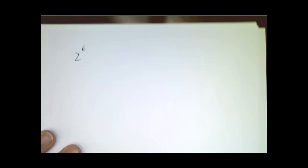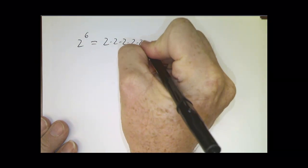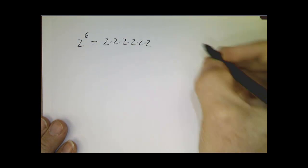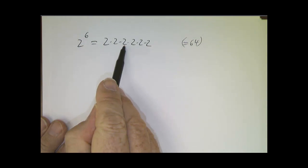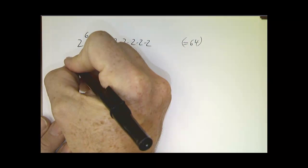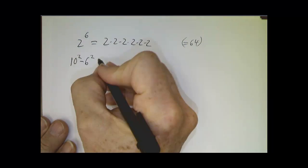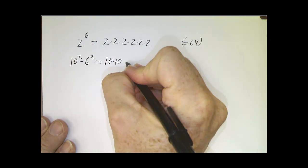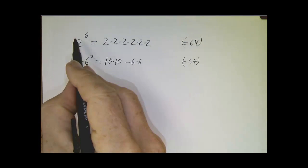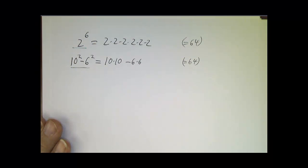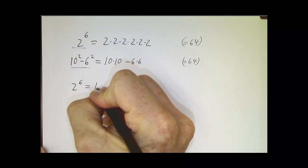Let me go by analogy. What does 2 to the 6th mean? It means 2 times 2 times 2 times 2 times 2 times 2 — six times. And that happens to equal 64, but that's not what 2 to the 6th means. If I ask what is 10 squared minus 6 squared, that means something completely different — it means 10 times 10 minus 6 times 6. And that also happens to equal 64. So 2 to the 6th and 10 squared minus 6 squared mean very different things, but there happens to be a mathematical result that says they happen to be equal.